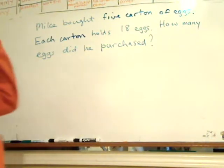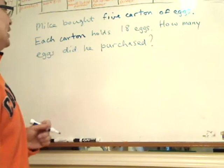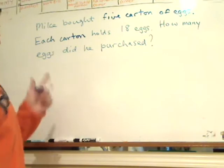Okay, so let's take it up. Now notice that it said 18 eggs and they're in a carton, it's five cartons. So what we're going to have to do is we're going to put 18 times five.